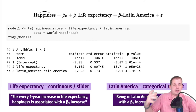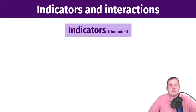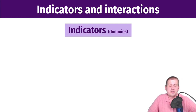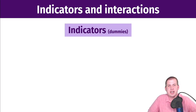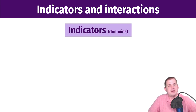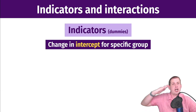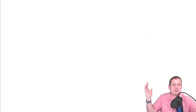These are called indicator variables — you may have learned them as dummy variables. There's a movement in the stats world to stop calling them dummy variables since 'dummy' is an ableist term. What they actually represent graphically is a change in intercept for a specific group: they shift the entire regression line up or down.